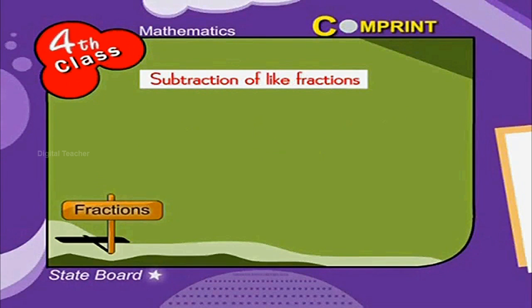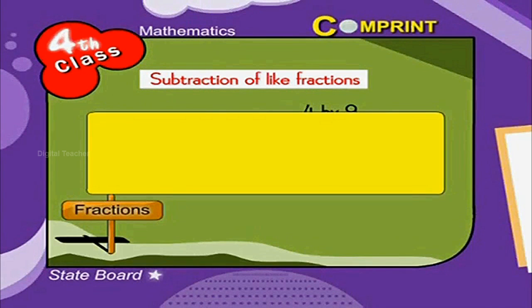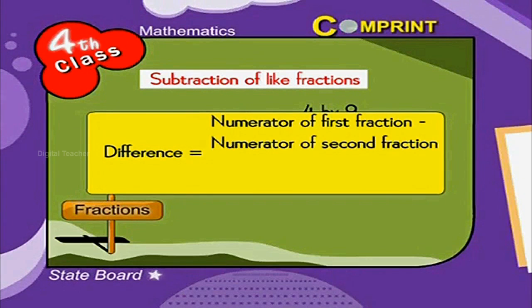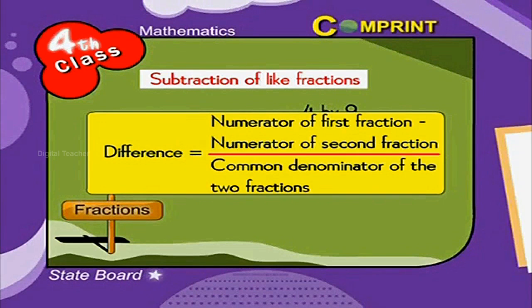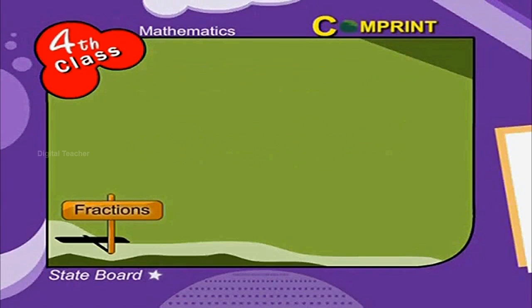Subtraction of like fractions — look at the example: 7 by 9 minus 4 by 9. The difference equals the numerator of the first fraction minus the numerator of the second fraction, over the common denominator of the two fractions. This problem is solved as 7 minus 4 by 9, which equals 3 by 9.